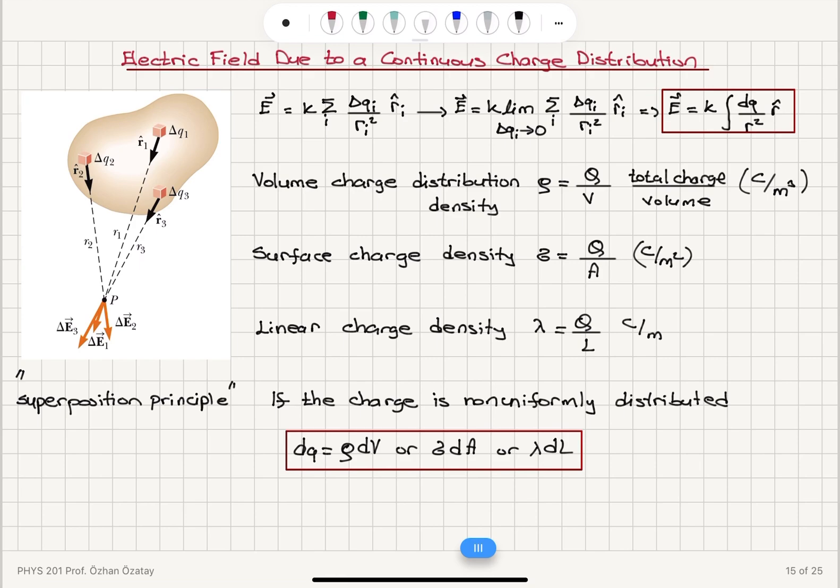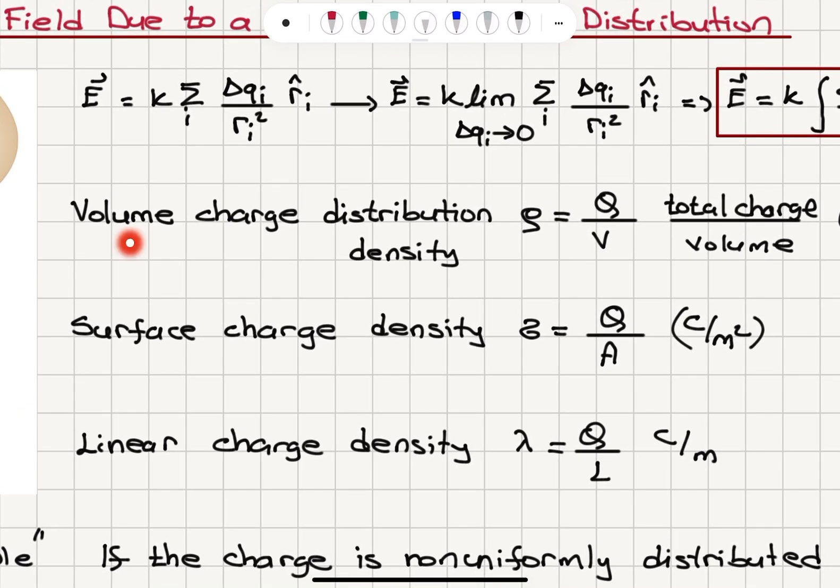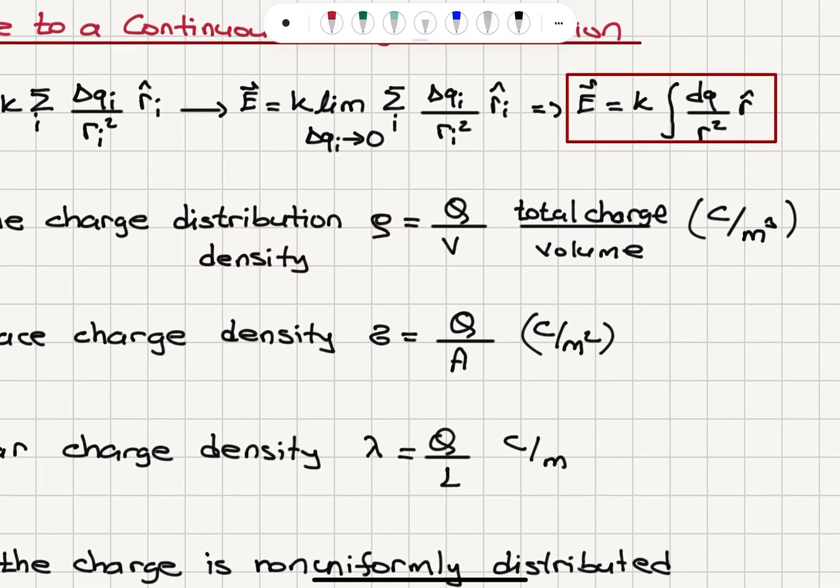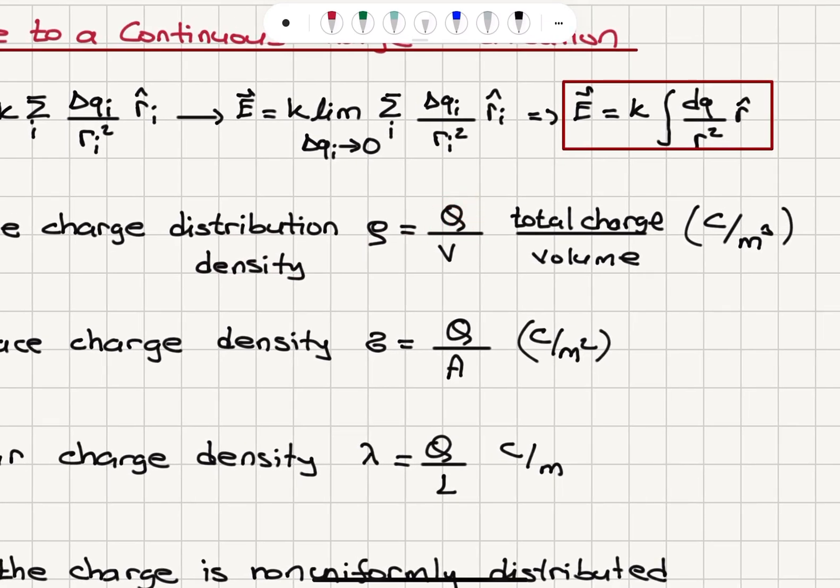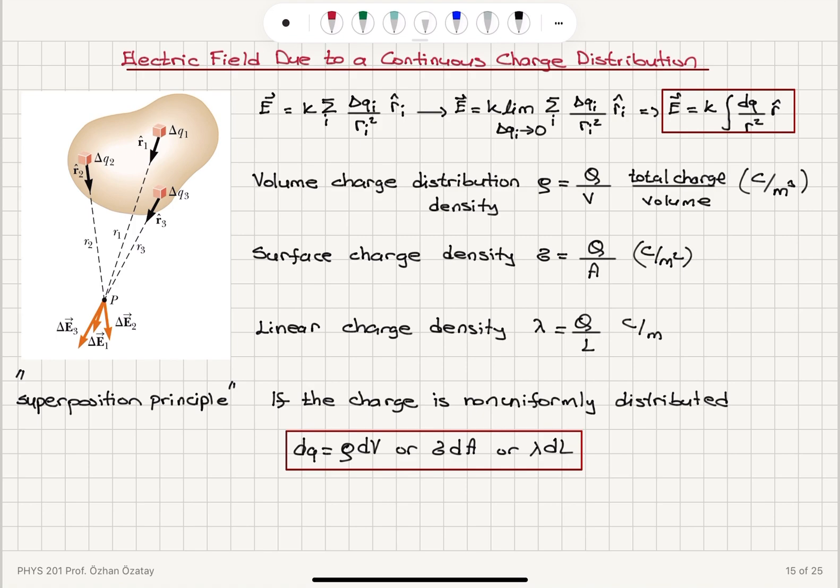Now, we can have three different scenarios. We may have a volume charge distribution. So if we name the volume charge density rho, that is the total charge Q divided by volume V for a uniform charge distribution, total charge divided by volume, that's Coulombs per meter cube.